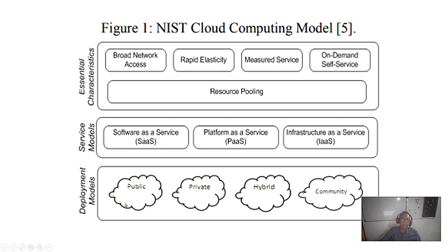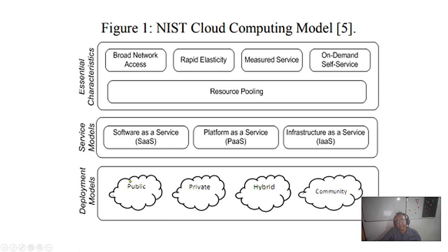For the deployment model: private cloud is the highest cost, so only very big companies can maintain it. Public cloud is the least expensive — most startups go for it. Google is the cheapest, with AWS and Azure also offering good facilities. Hybrid cloud is used by big companies that maintain secure portions privately and other things publicly. Community cloud is another option. Mainly the public model is for startups.